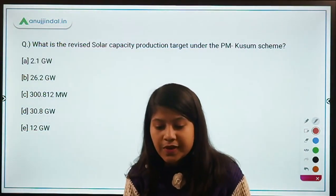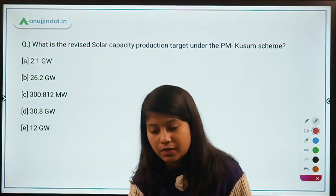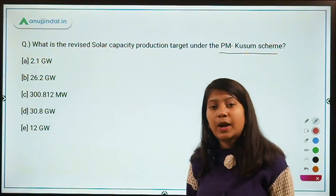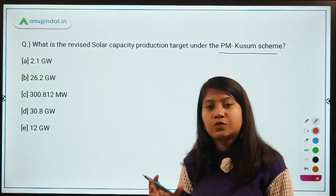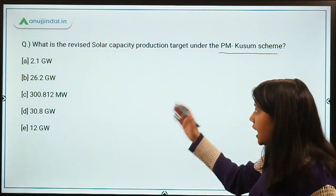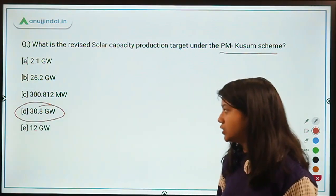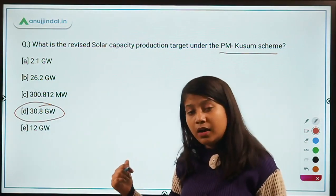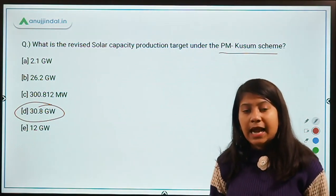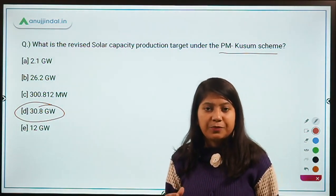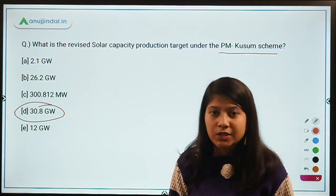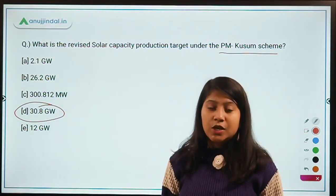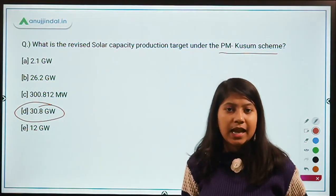What is the revised solar capacity production target under the Pradhan Mantri KUSUM Scheme? This scheme provides solar pumps to farmers for irrigation needs. The target has been increased to 30.8 gigawatts. For more details on the scheme's technicalities and new operational guidelines, watch the PIB 247 session discussed by Manish Sir — useful for Phase 2 and interview stages.